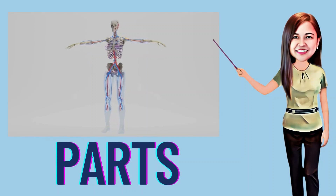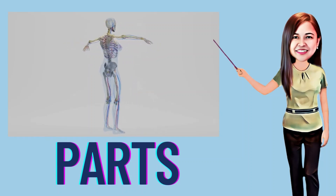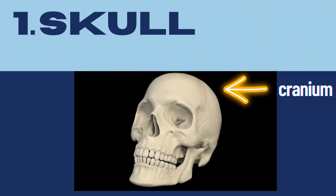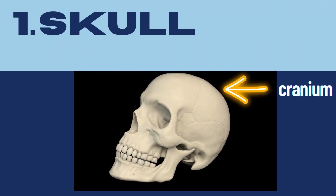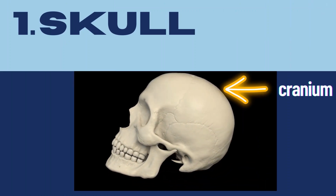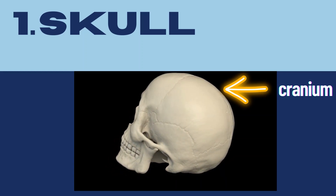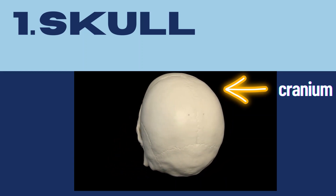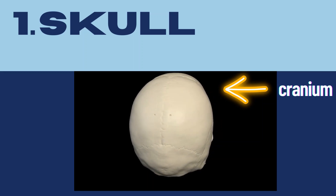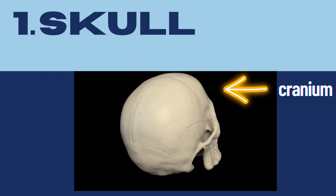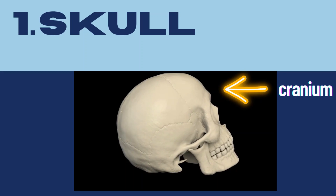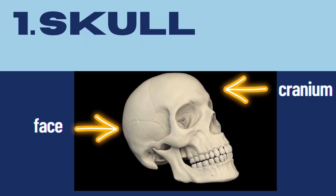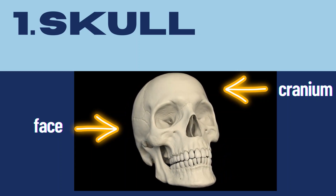The musculoskeletal system has parts. The first one is the skull. The skull is the part that encloses the brain, and this specific part is called the cranium. The cranium encloses our brain. Aside from the cranium, we have the face — this is the part that protects our face.